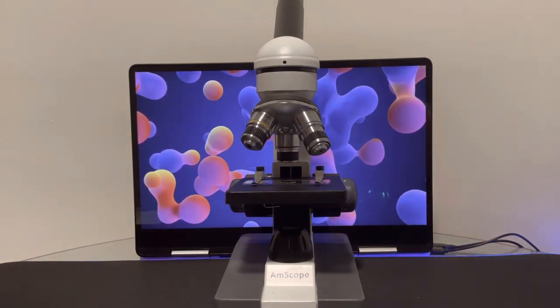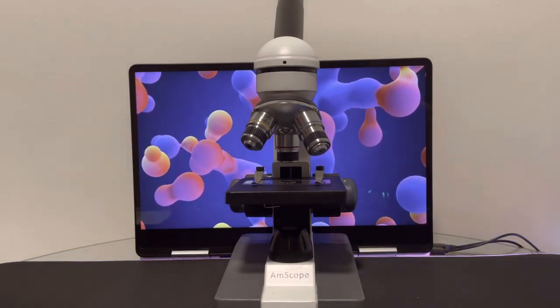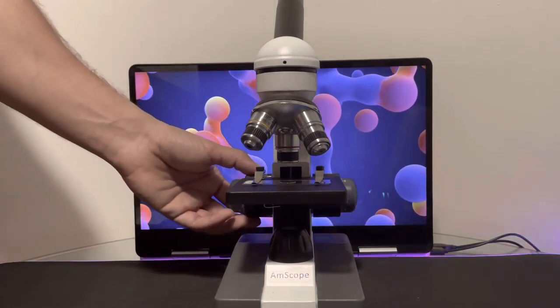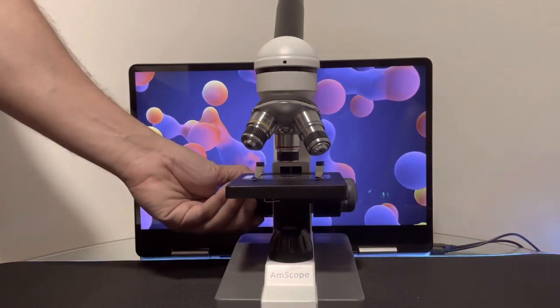And when it is centered, you could go ahead and move the coarse focusing knob up towards the objective lens till you see a clear image.